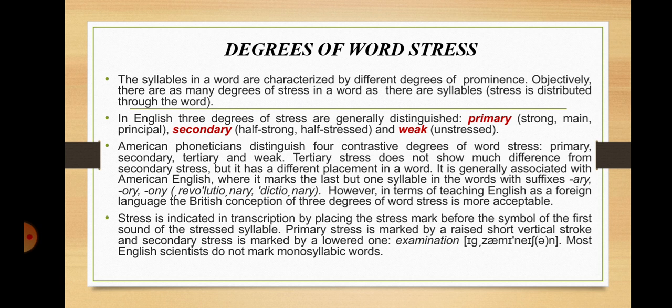However, in terms of teaching English as a foreign language, the British conception of three degrees of word stress is more acceptable. Stress is indicated in transcription by placing the stress mark before the symbol of the first sound of the stressed syllable. Primary stress is marked by a raised short vertical stroke, and secondary stress is marked by a lowered one. For example, 'examination.' Most English scientists do not mark monosyllabic words.